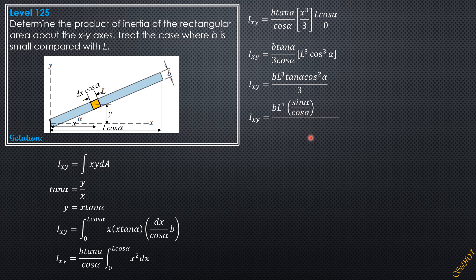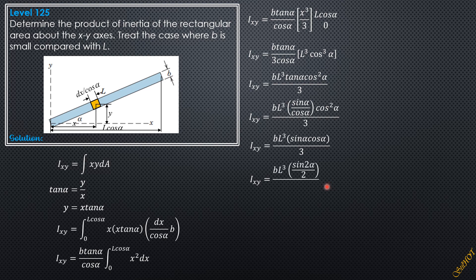Simplifying, one cos α cancels, giving Ixy = b·l³·tan α·cos²α / 3. Since tan α = sin α / cos α, substituting gives Ixy = b·l³·sin α·cos α / 3. From trigonometry, sin α·cos α = sin 2α / 2, so the final answer simplifies to Ixy = b·l³·sin 2α / 6. That is the product of inertia of this bar with respect to the x-y axis.